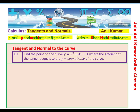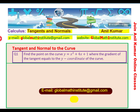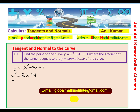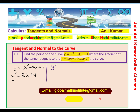Now let's look into the solution of question one: find the point on the curve y equals x squared plus 4x plus 1, where the gradient of the tangent equals the y coordinate of the curve. It is slightly difficult to understand, but let's try. We are looking at two things: the gradient of the curve, which is the derivative. Using the power rule, the derivative is 2x plus 4. Now we want this gradient to equal the y coordinate of the curve.